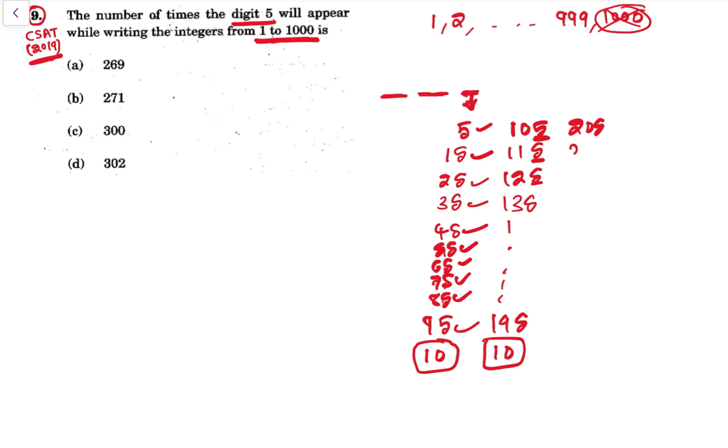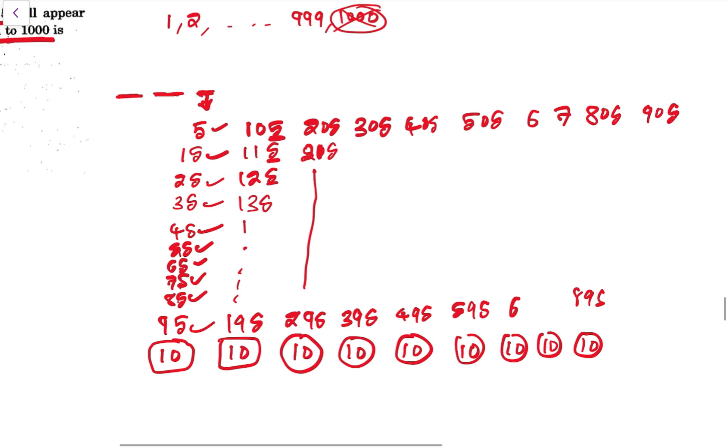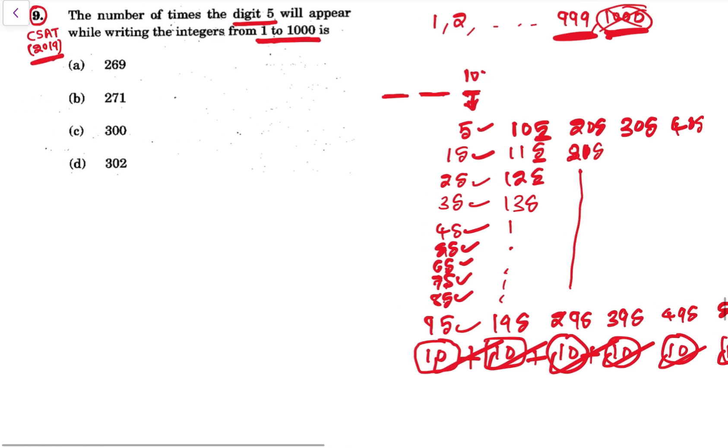Then 205, 215 till 295, again there are 10. Similarly 305 to 395 there are 10 fives, and 405 to 495 there are 10 fives. Then 505 to 595 there are 10, 605 to 695 there are 10, 705 to 795 there are 10, 805 to 895 there are 10, and 905 to 995 there are 10. So this is 10 times 10, that is 100 times digit 5 occurs in units place.